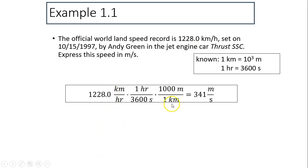Similar concept: kilometers on top, kilometers on bottom. This way these two cancel out. And hours on the bottom, hours has to be on top, so hours and hours cancel. So after you multiply all the tops, divide by all the bottoms, you should have 341 meters per second.